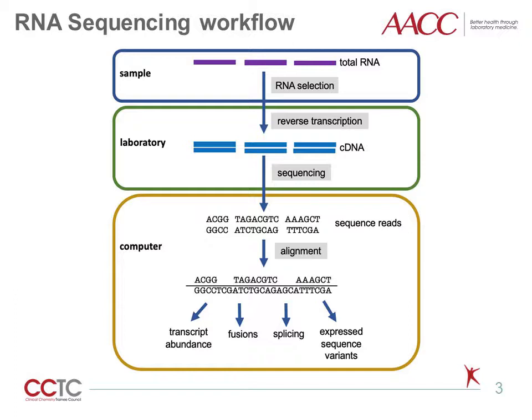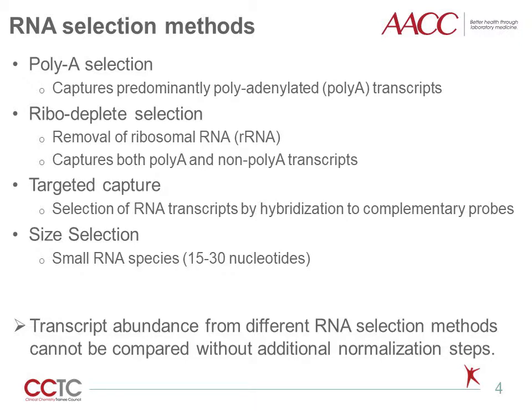Downstream analyses quantify transcript abundance, detect fusions or unusual splice isoforms, and expressed sequence variants. There are several methods for selecting RNA of interest from total RNA in the cell. PolyA selection captures mainly polyadenylated transcripts. Ribodeplete selection removes ribosomal RNA, which constitutes approximately 80% of RNA in the cell, leaving behind all non-ribosomal RNA, which can contain both polyA and non-polyA transcripts. Targeted capture methods select specific RNA transcripts using hybridization to complementary probes. Size selection methods can enrich for specific transcript lengths, such as small RNA species.